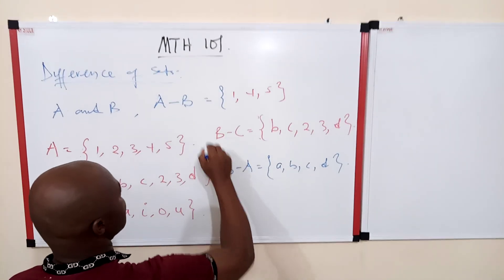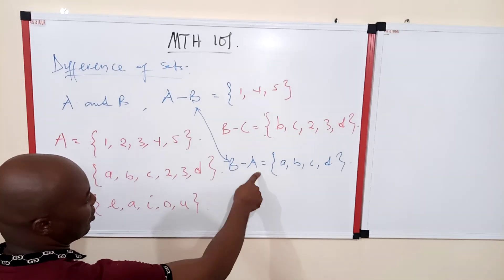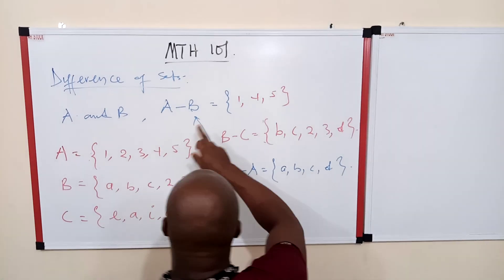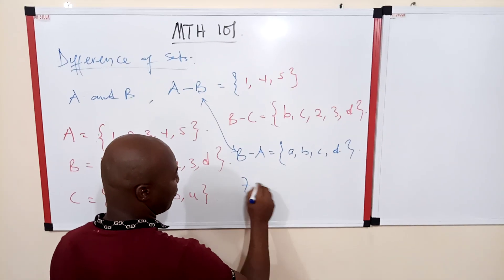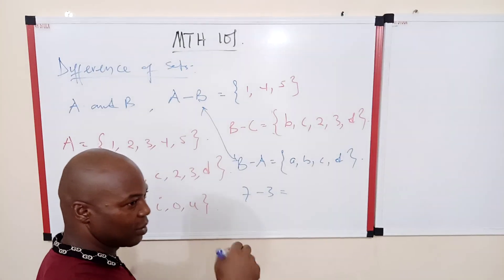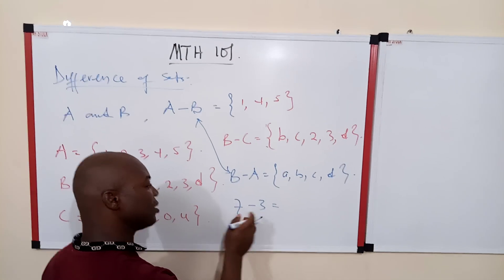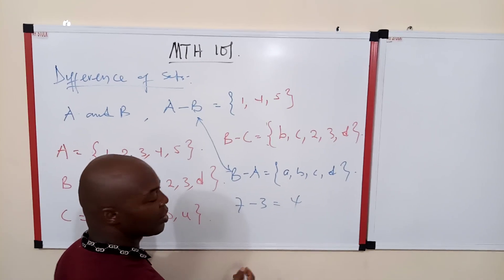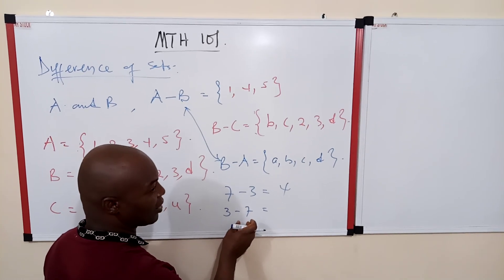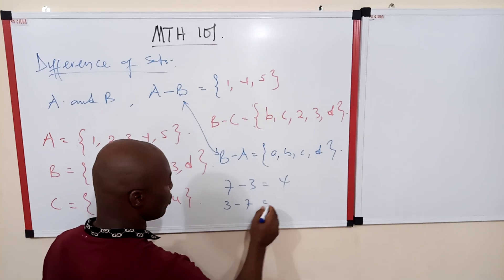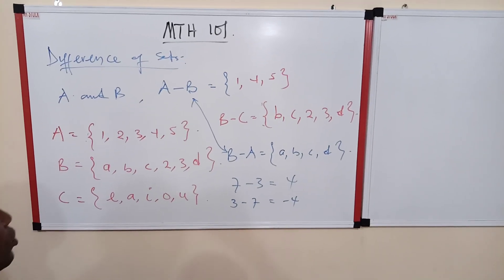If you look at these two results, A minus B and B minus A, they are not the same — they are not equal at all. We have to note the order in which things are written. This is similar to numbers: 7 minus 3 gives 4, but 3 minus 7 gives negative 4. There are elements in 7 not in 3, but reversing the order gives a different result. So order matters.